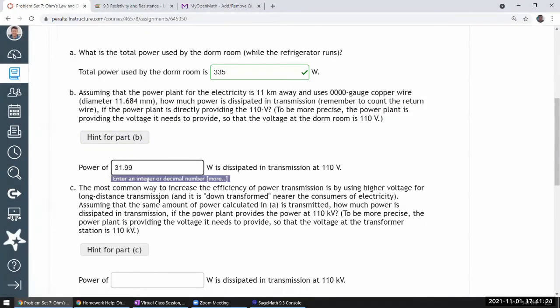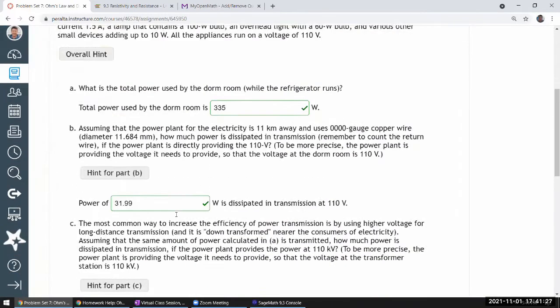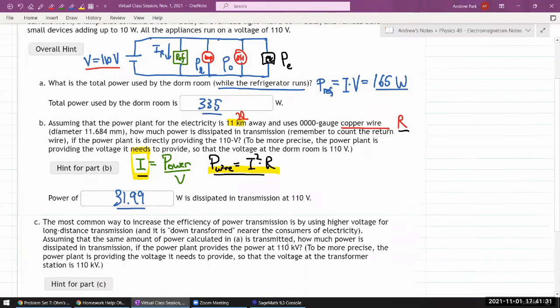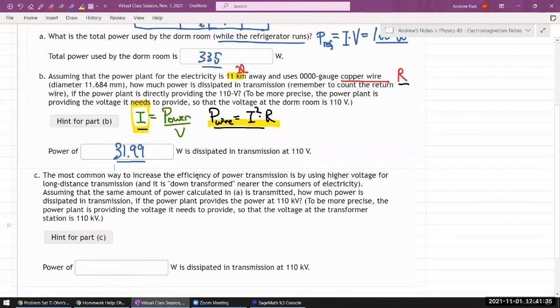And that really goes to the part C, where we do the calculations slightly differently. And this is the reason why we use AC power. So the most common way to increase the efficiency of power transmission is by using higher voltage for long distance transmission. So you can almost see it in this expression here. So if you are looking to deliver a fixed amount of power, that's given by current times voltage. So given fixed P, the higher the voltage is, the lower the current can be.